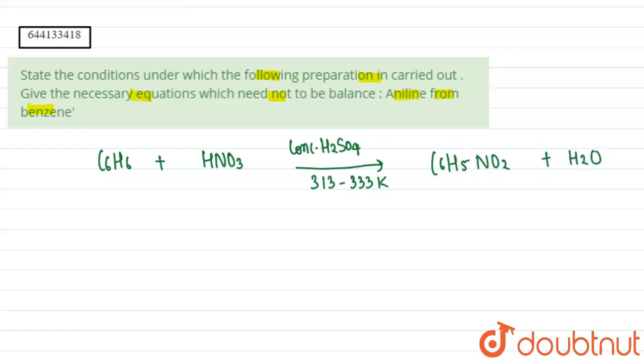Now if we reduce the nitro benzene in an acidic medium with the help of tin, okay, Sn plus HCl.